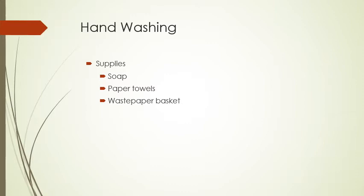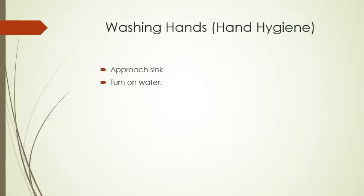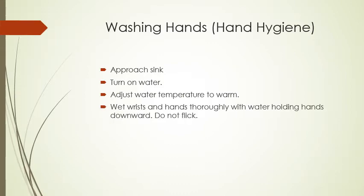Hand washing seems like a simple task but there's a proper way to do it. The supplies you need are a sink, soap, paper towels, and a waste paper basket. First, approach the sink, turn on the water, and adjust the temperature so it's warm. Wet your wrists and hands thoroughly, making sure you're holding your hands downward. We're going to be attaching a hand washing video to this section, and we will check you off at lab to make sure you are doing this correctly.